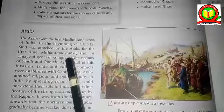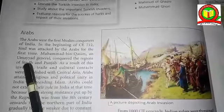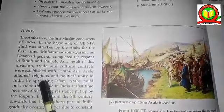Let's start. The Arabs were the first Muslim conquerors of India. In the beginning of CE 712, Sindh was attacked by the Arabs for the first time. Muhammad bin Qasim, an Arab general, conquered the region of Sindh and Punjab. As a result of this invasion, trade and cultural contacts were established with Central Asia. Arabs attempted religious and political unity in India by spreading Islam.